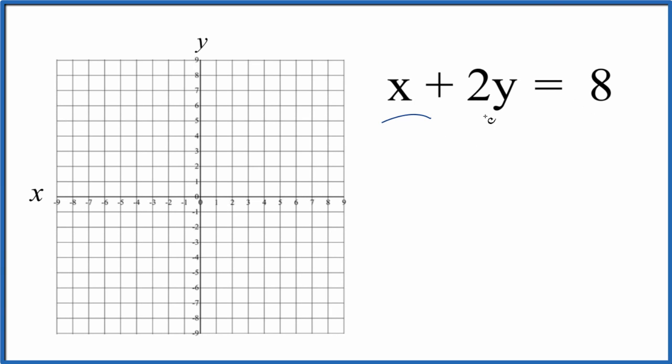Let's graph the equation x plus 2y equals 8, and we're going to use slope-intercept form to do that. So what we first need to do is we need to get this equation here in slope-intercept form.